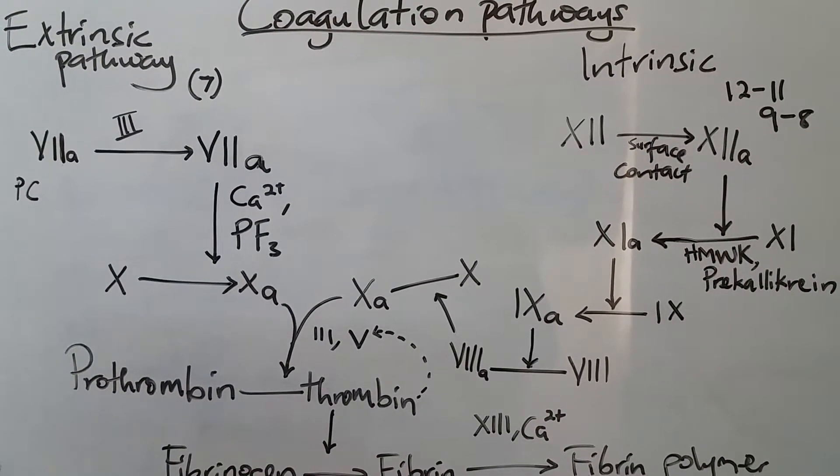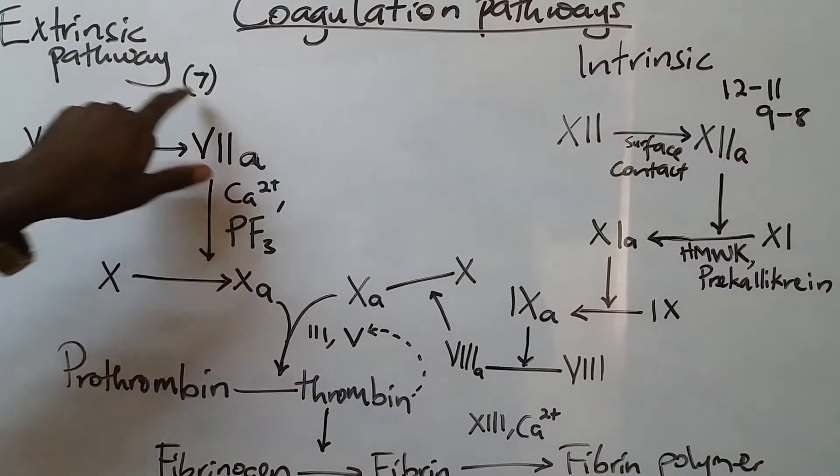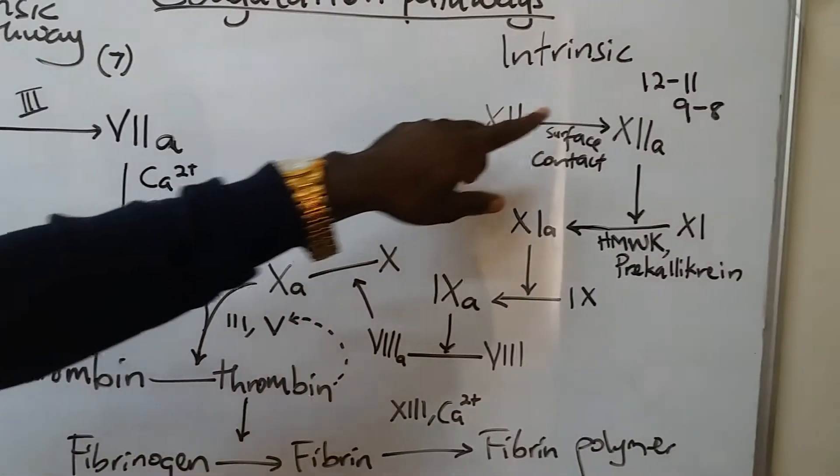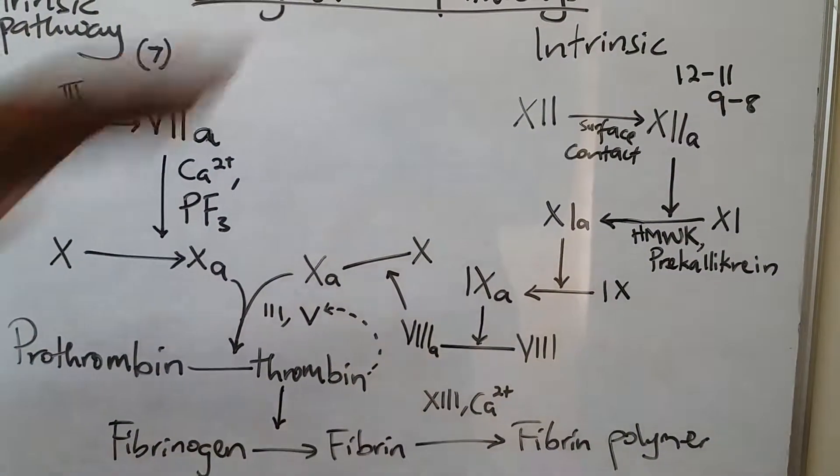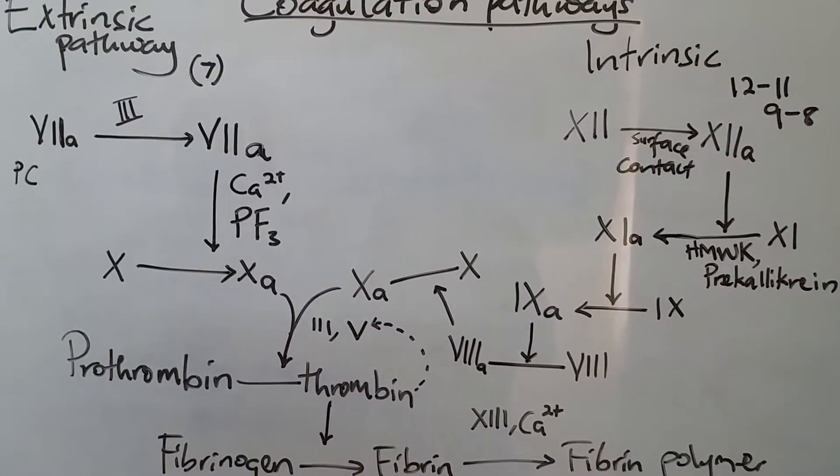For those who love mnemonics, we have 7 for the extrinsic pathway, and then we have 12 to 11 for the intrinsic and then 9 to 8. All of these will involve activation as we shall see.